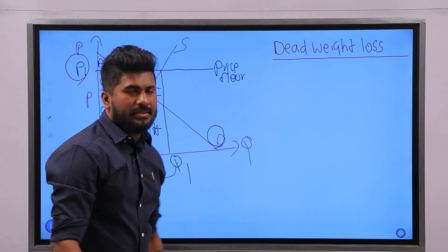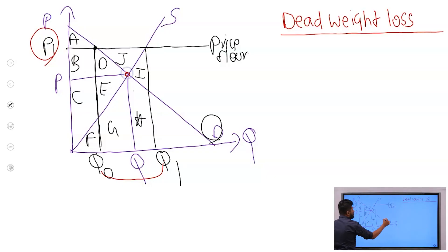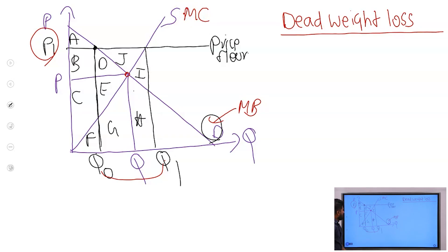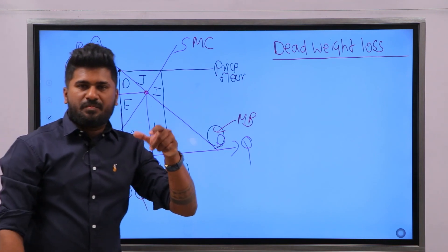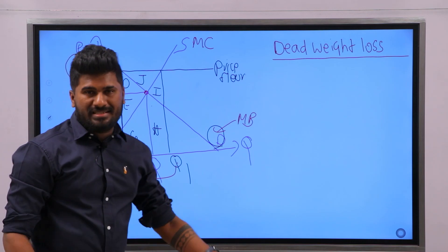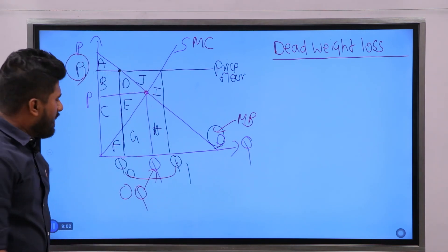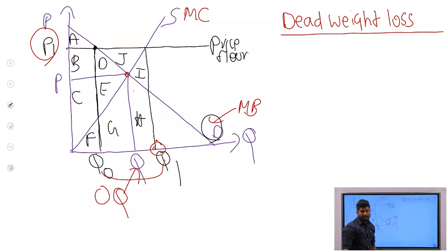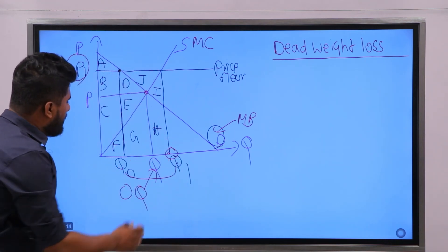Now, what is the optimum quantity required by this society? The demand curve is the MB curve and the supply curve is the MC curve. Where MB equals MC, that is the optimum quantity — I am calling it OQ. But now, producers are producing Q1 quantity at the minimum price. The excess supply will be purchased by the government. So Q1 is the quantity now being produced by producers. Q is the optimum quantity.